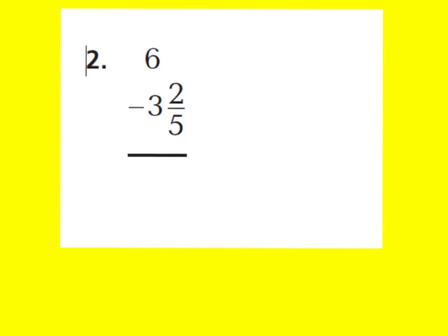What we have to do is make a fraction that we can subtract from, by taking away from our whole number. If I subtracted 1 whole away from 6 wholes, I would have 5 wholes left. But if I'm taking away a whole, I'm going to be adding a whole to my fraction. I know that the denominator is out of fifths, so a whole would be 5 fifths. Now I have a fraction that I can subtract from.